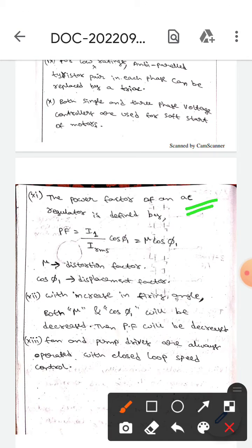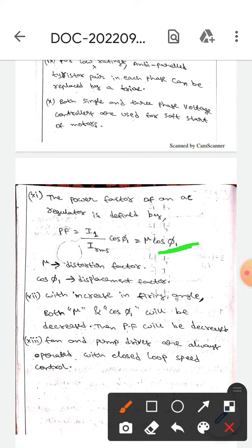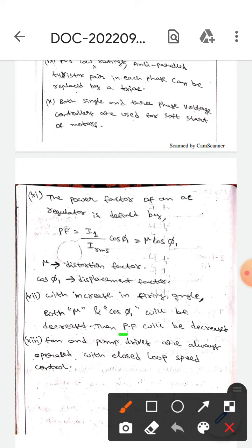The power factor of an AC regulator is defined by PE equals I1 by IRMS into cos phi, which equals mu into cos phi1. Here, mu is the distortion factor, and cos phi1 is the displacement factor. With increase in the firing angle, both mu and cos phi1 will be decreased, then power factor will be decreased.